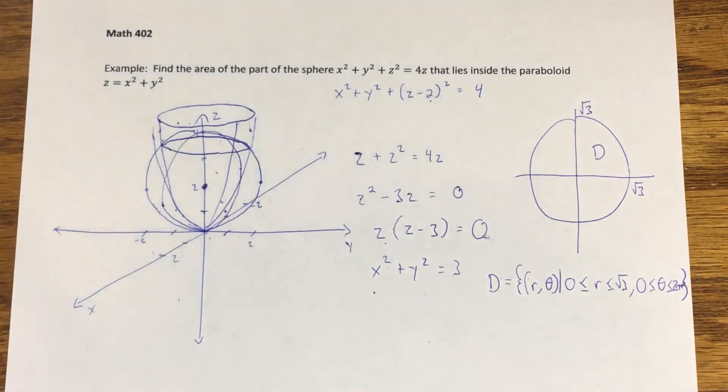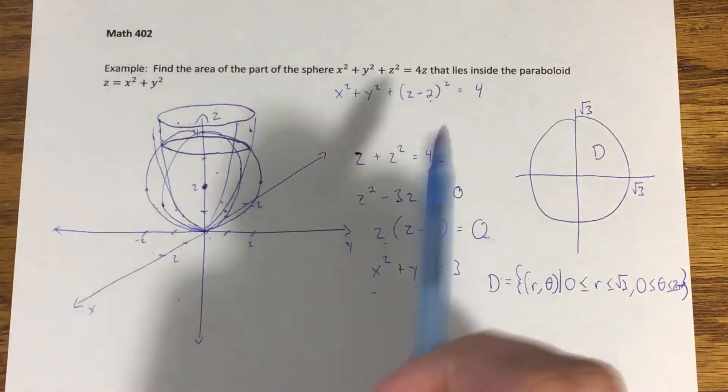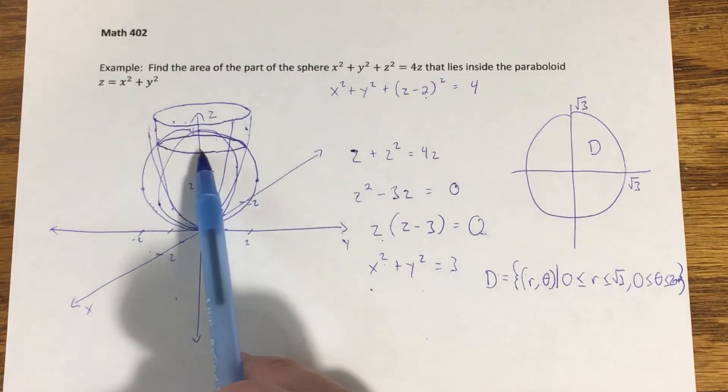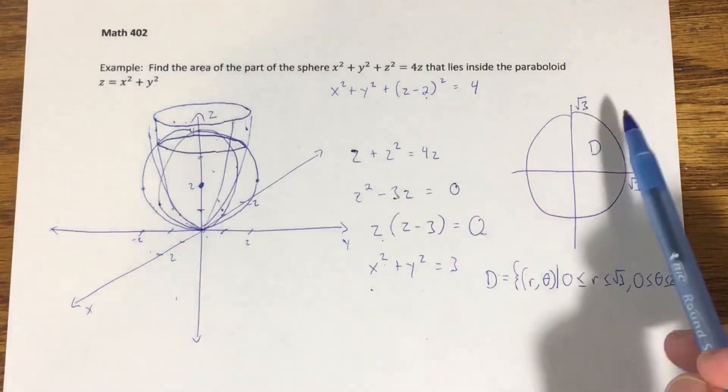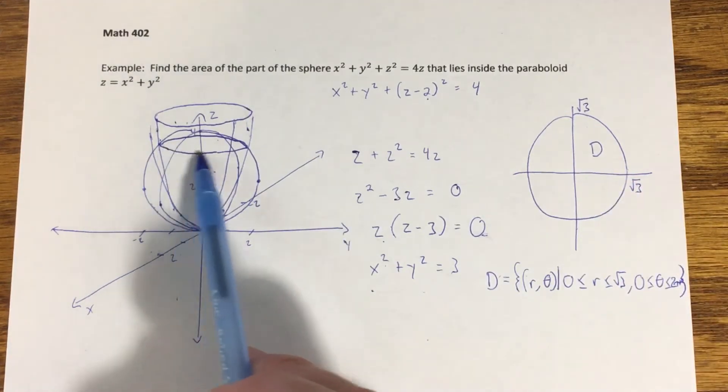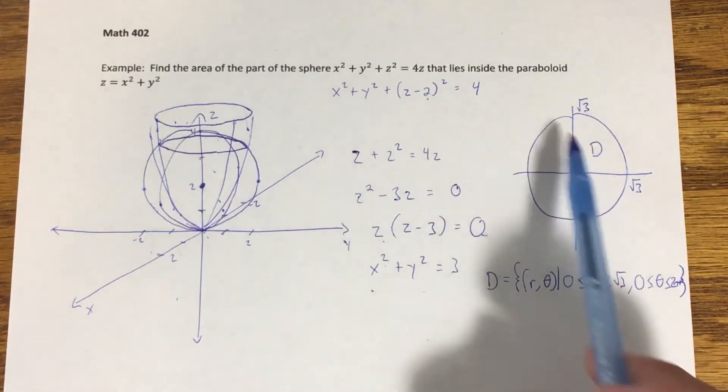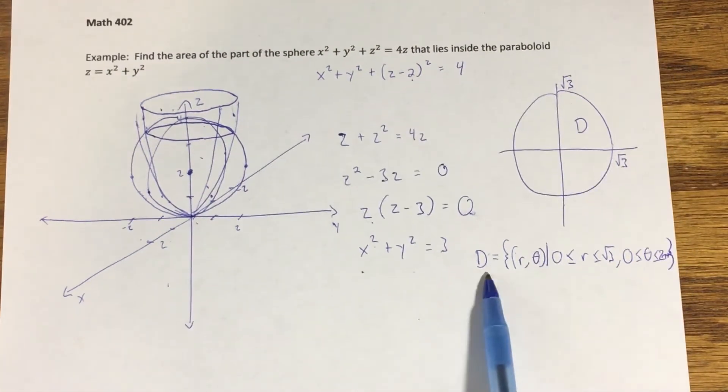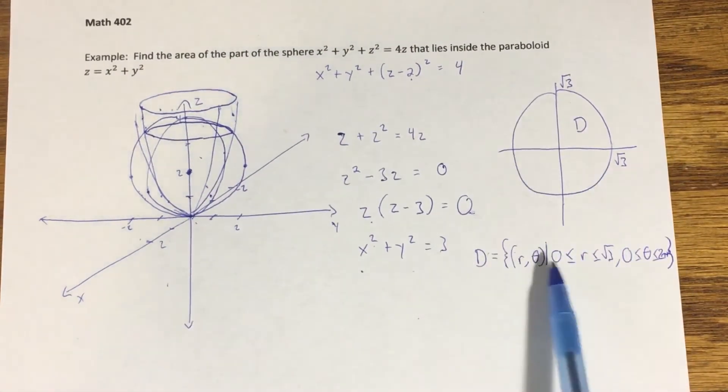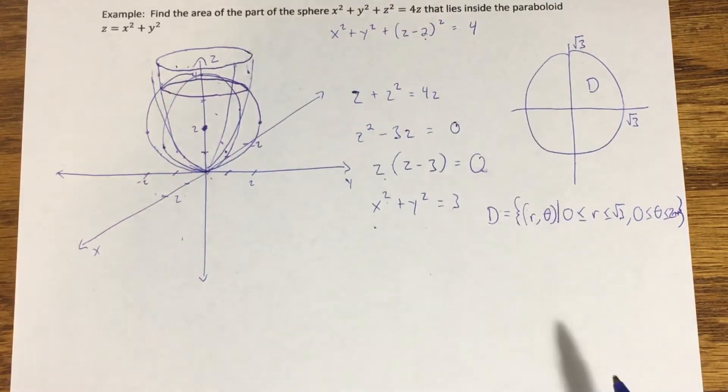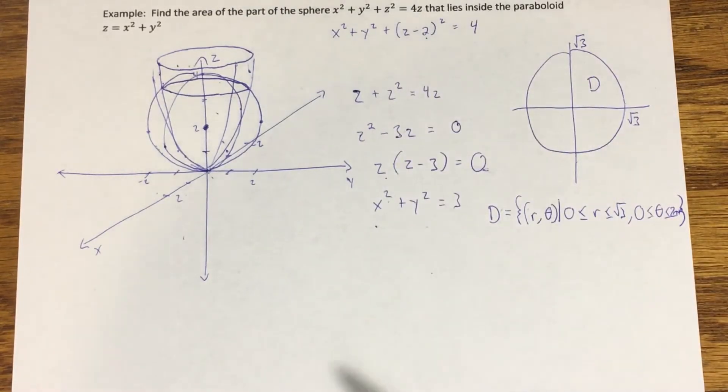We determine that by looking at the portion of the sphere that would lie within this paraboloid. Through the work we've done, we found the region in the xy plane that that little cap lies directly above, so we're going to use that in the double integral. We wrote our set D describing that region in polar coordinates because it's a circle or a disc, and polar coordinates are usually a lot easier to work with in that scenario.